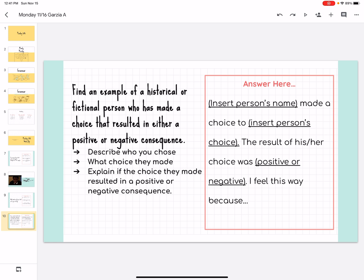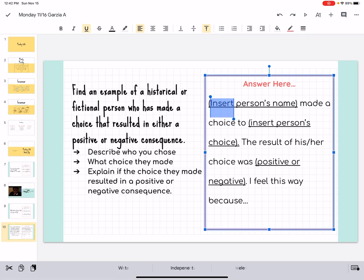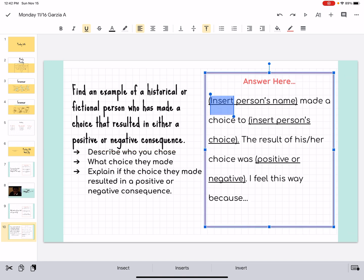And then your last task is to come down here, and we would like you to find an example of a historical or fictional person who has made a choice that resulted in either a positive or negative consequence. So, you're gonna describe who you chose, what choice they made, explain if the choice they made resulted in a positive or negative consequence. Your best friend right now is gonna be Google, okay? So, shoot, pick your favorite celebrity, whoever you want, right? I mean, if we're gonna be going obvious right now, Trump is kind of an obvious one who's making some interesting choices. So, we could go ahead and talk about, oh, too much.